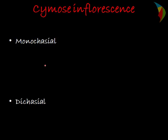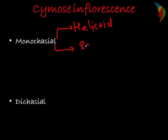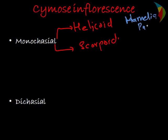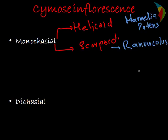In the case of monochasial inflorescences there are two types: helicoid type and scorpioid type. The main example of the helicoid type is Hemerocallis. In the case of the scorpioid type, the main example is Ranunculus bulbosus.